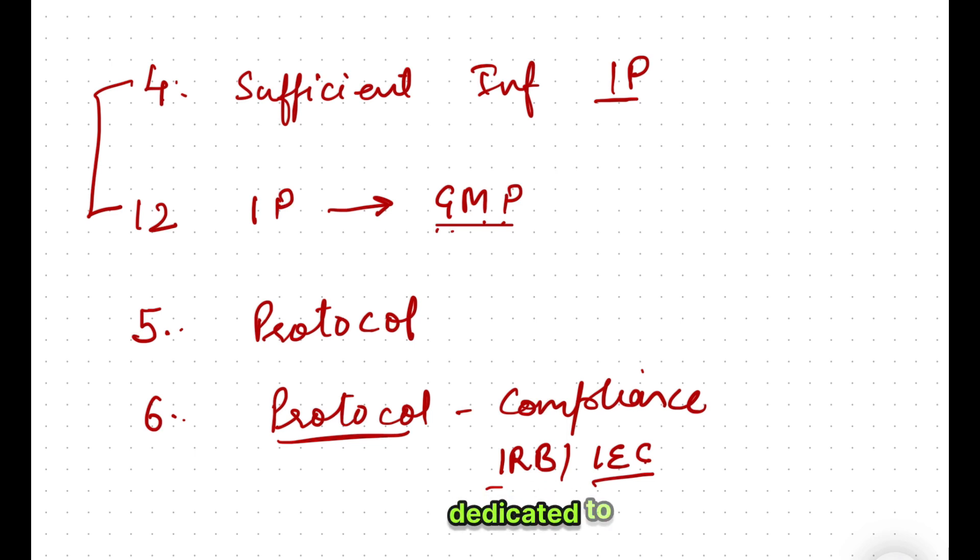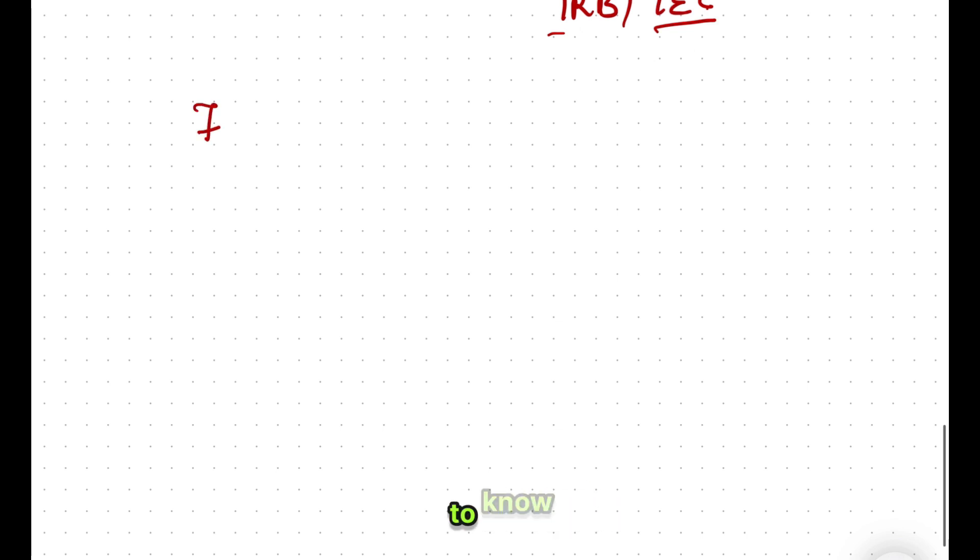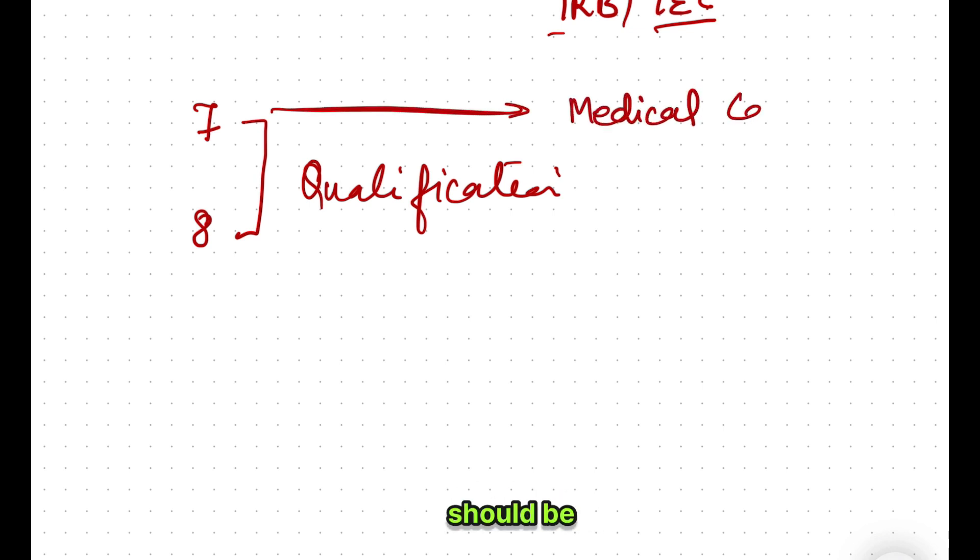Now moving to the seventh principle, and you will be amazed to know that the seventh and eighth principles both are linked to qualification. The seventh principle is saying that medical care should be by a qualified doctor or medico. The eighth principle is saying that staff should be qualified. So these two principles are talking about qualification. The seventh and eighth principles you can remember by qualification.